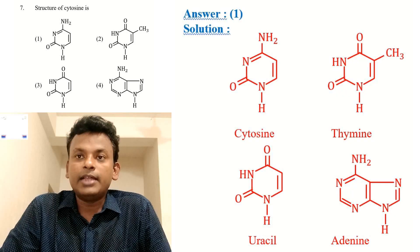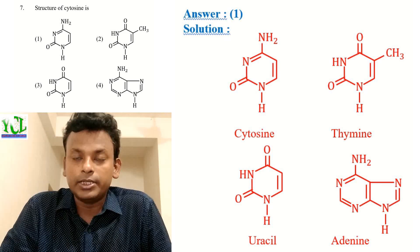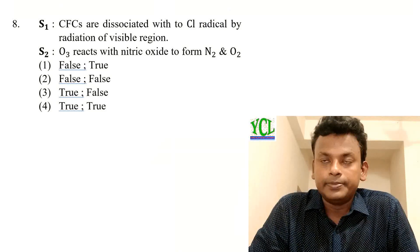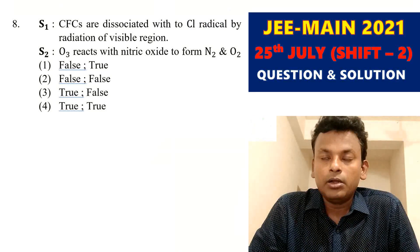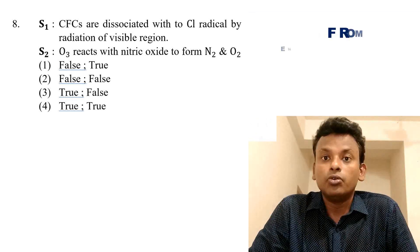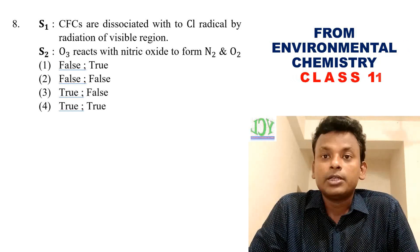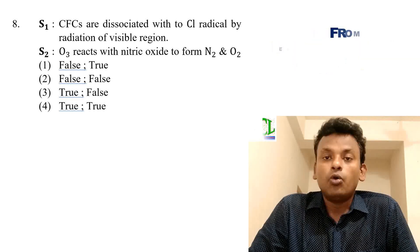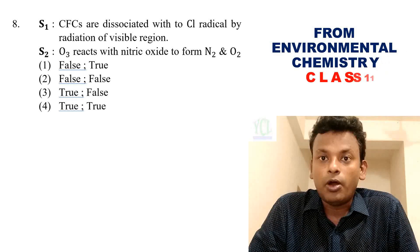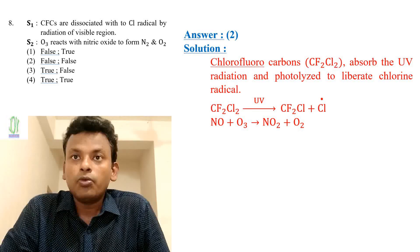Question 7: The structure of cytosine — options are given and the answer is option 1; the first structure is cytosine. Question 8: Statement 1 — chlorofluorocarbons dissociate to give chloride radicals by radiation in the visible region. Statement 2 — O3 reacts with nitric oxide to form N2 and O2.